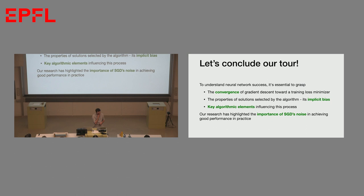In conclusion, the noise of SGD helps you converge toward sparse solutions with good generalization properties. To summarize our tour: to understand the success of neural networks in practice, it is very important to understand why gradient descent converges to a minimum of the train loss, and to understand what algorithmic elements influence this process.